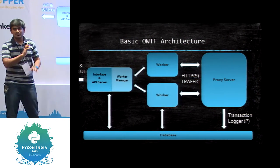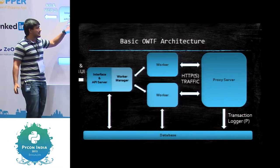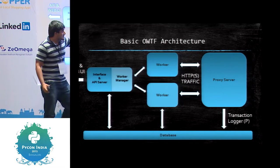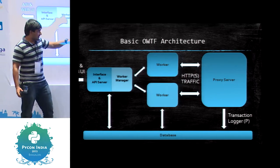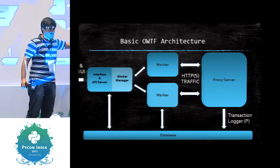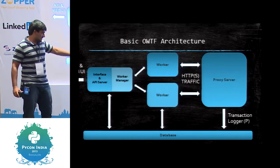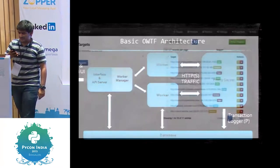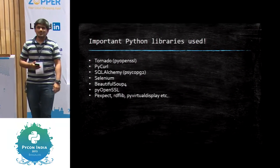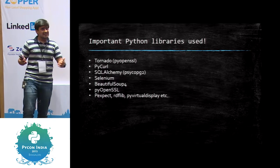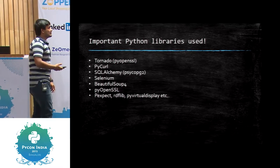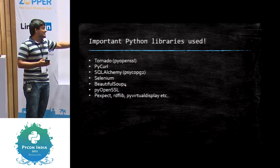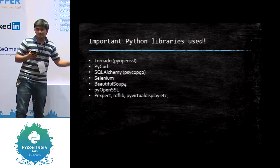This is the basic architecture of OWTF. You have an interface and API server which serves the users the API and the web UI. Part of this server is a worker manager. These worker processes are the main units which run the plugins. When plugins run in these workers, the traffic is sent through a proxy server, which gets logged in the transaction database by a transaction logger process. Ultimately, anything and everything is available through the DB. The Python libraries we use include Tornado, PycURL, SQLAlchemy for ORM. We also use Selenium and BeautifulSoup — not performance freaks, just building a tool here.